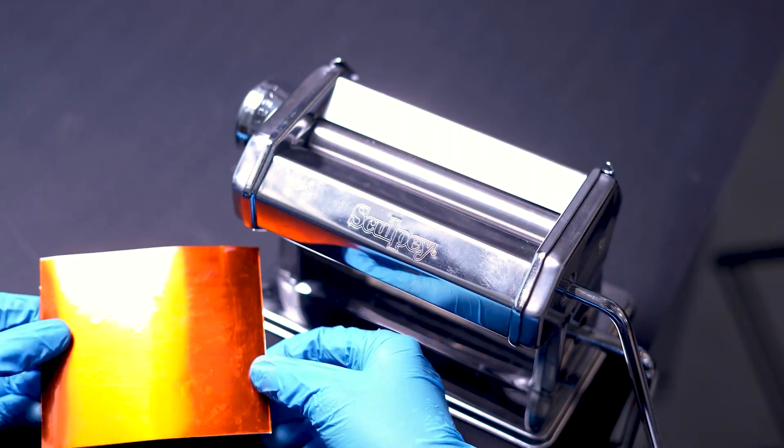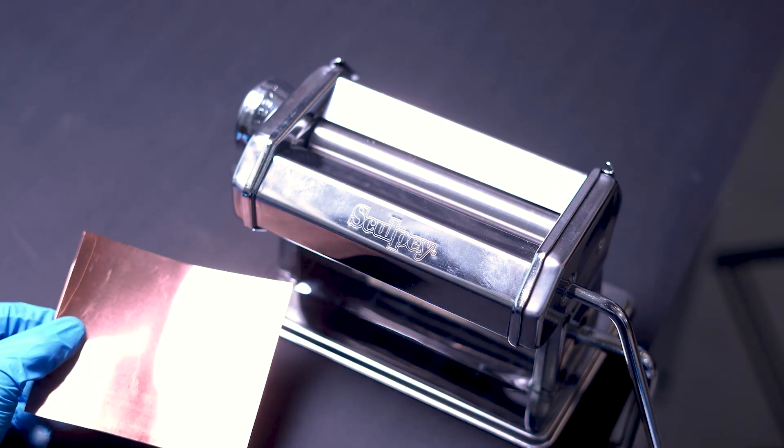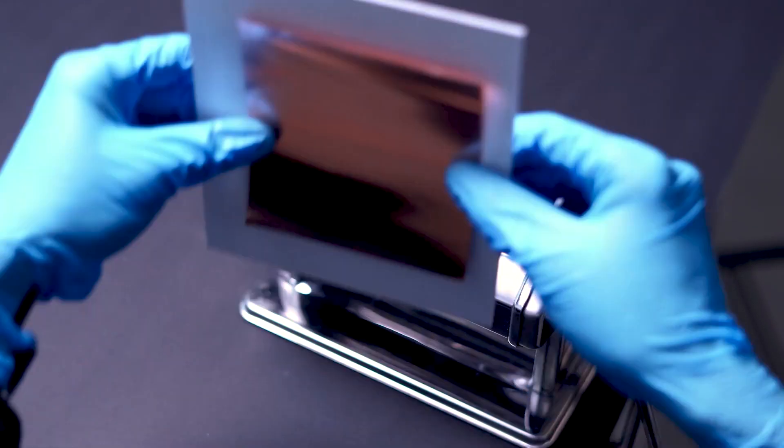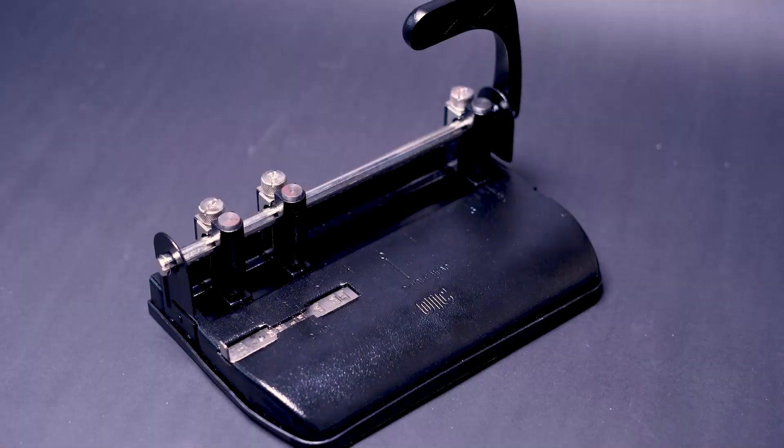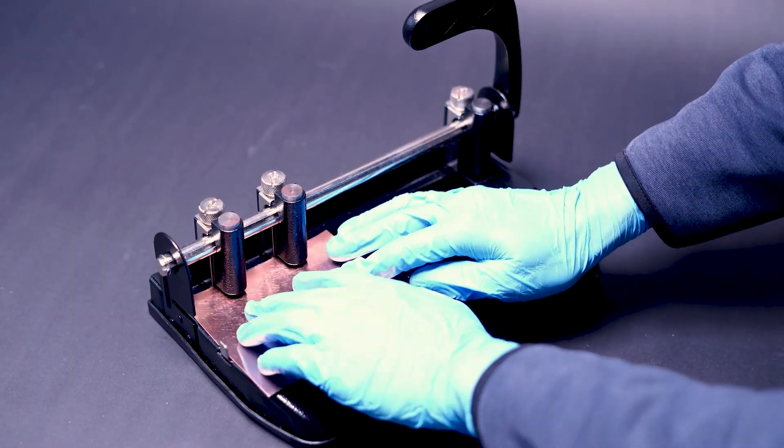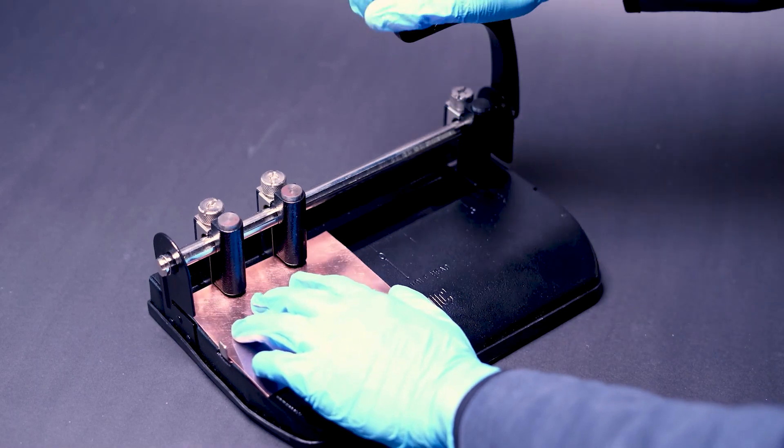The composite then goes through the roller press to remove bubbles between the layers. And lastly, alignment holes are punched to the side of the composite before it goes to the laser bed.